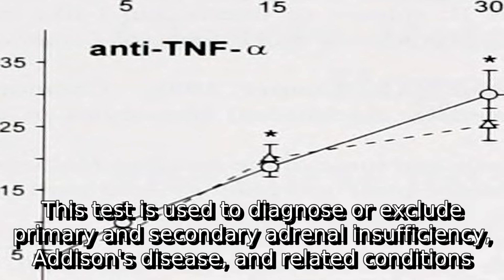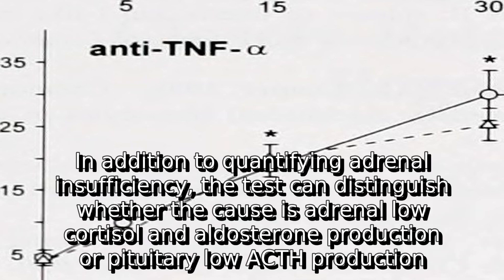This test is used to diagnose or exclude primary and secondary adrenal insufficiency, Addison's disease, and related conditions. In addition to quantifying adrenal insufficiency, the test can distinguish whether the cause is adrenal (low cortisol and aldosterone production) or pituitary (low ACTH production).